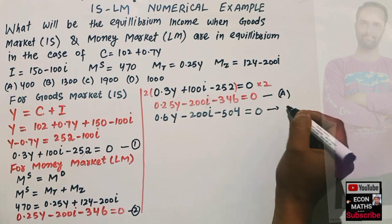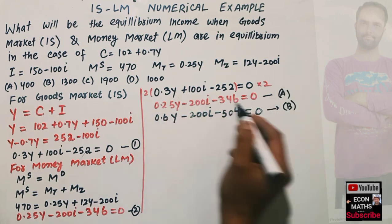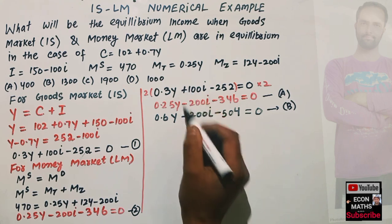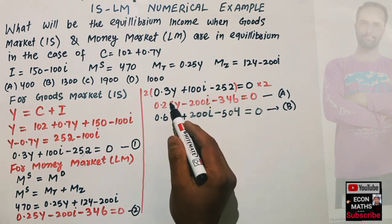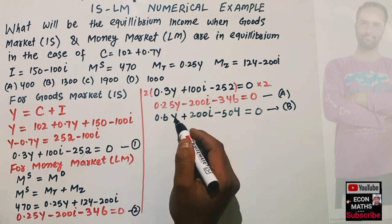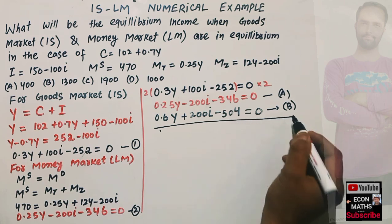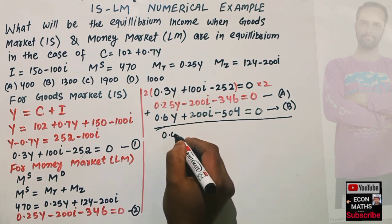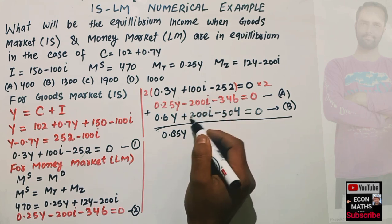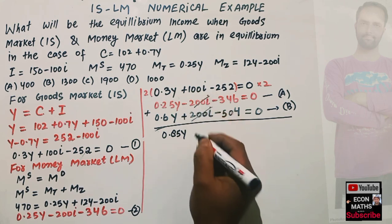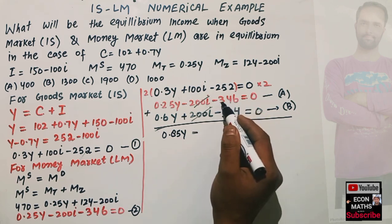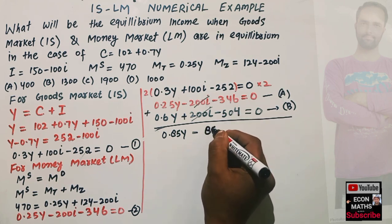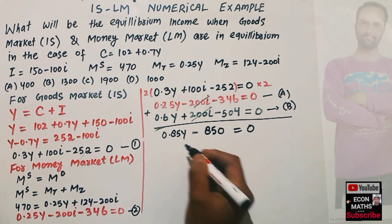Now we add Equations A and B. The +200i and -200i cancel out. Adding the Y terms: 0.6Y + 0.25Y = 0.85Y. Adding the constants: -504 - 346 = -850. So we get 0.85Y - 850 = 0.